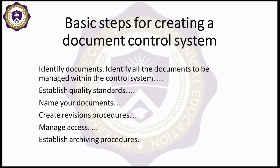The basic steps for creating a document control system: first, identify all the documents to be managed within the control system; establish quality standards; name your documents; and create provisions and procedures. You have to identify which department the documents belong to and then give names to the documents so you can know which organization, which department, and what work is in it.